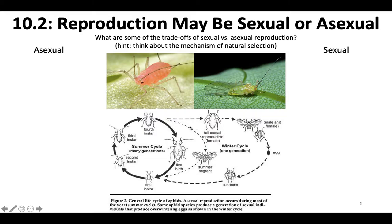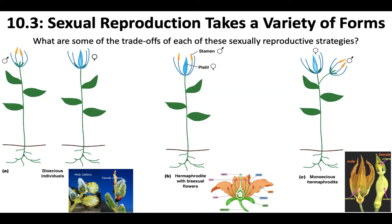Usually aphids will have a sexual cycle when they need to move to a new host plant. So think about that when you think about the trade-offs between asexual versus sexual reproduction, and we'll talk about this in class when we meet in person. Sexual reproduction can take a variety of forms, and we'll discuss those trade-offs in class, but let me go over a few different types.